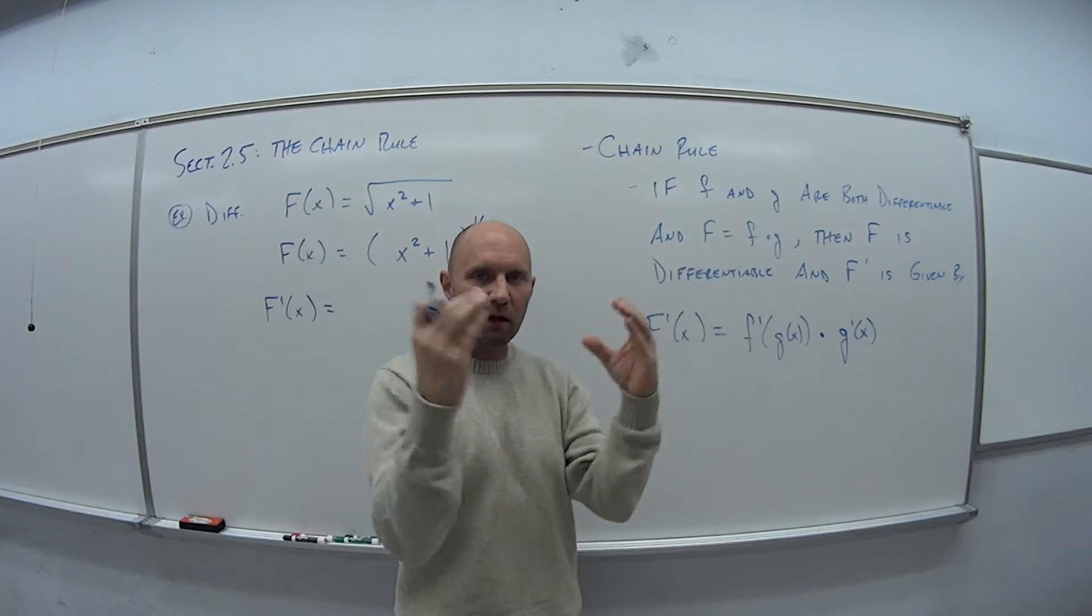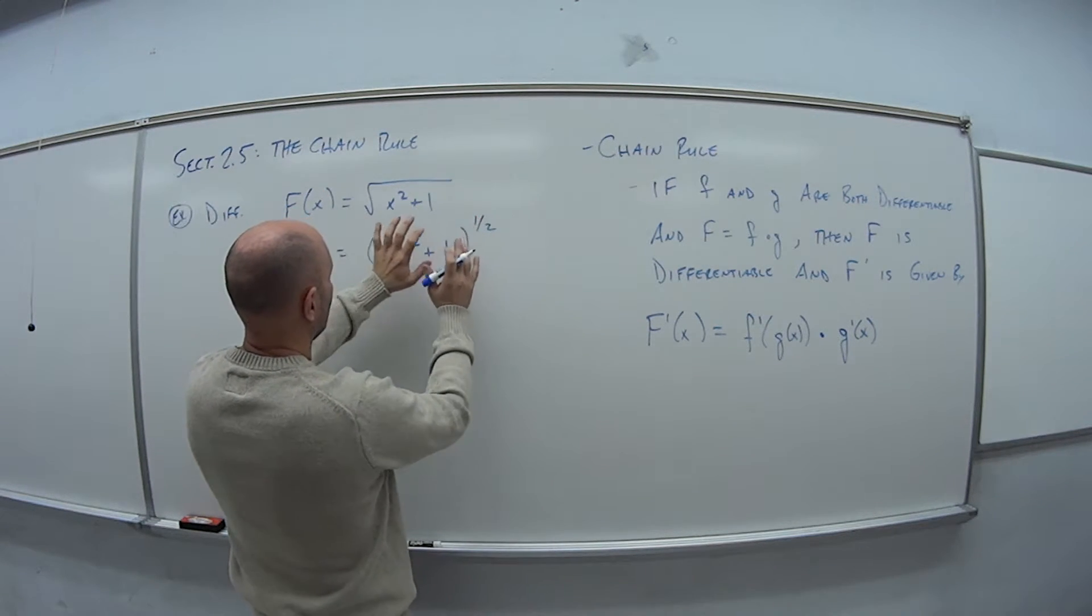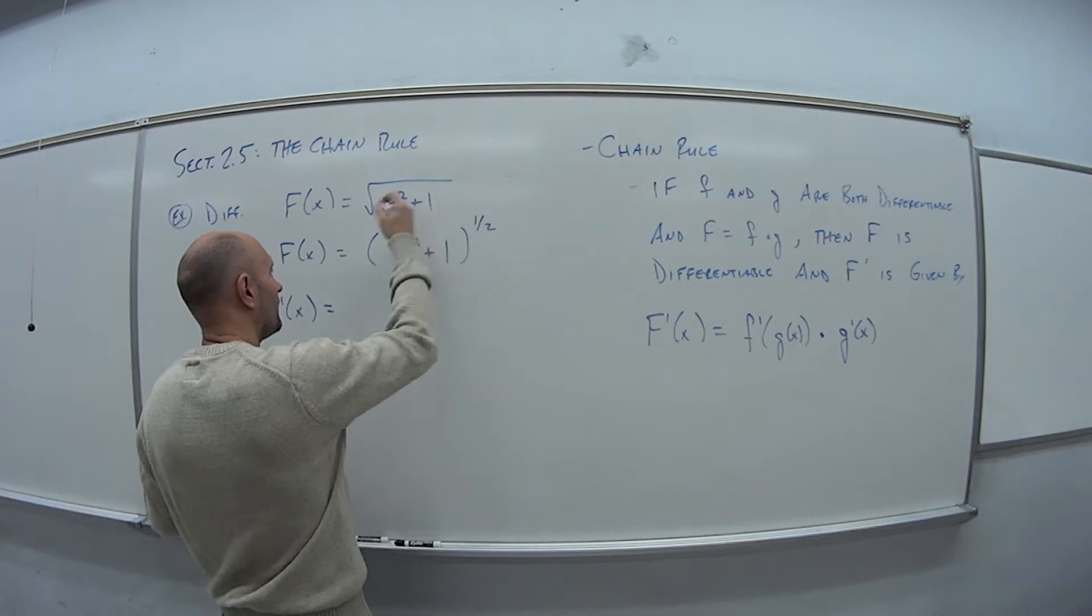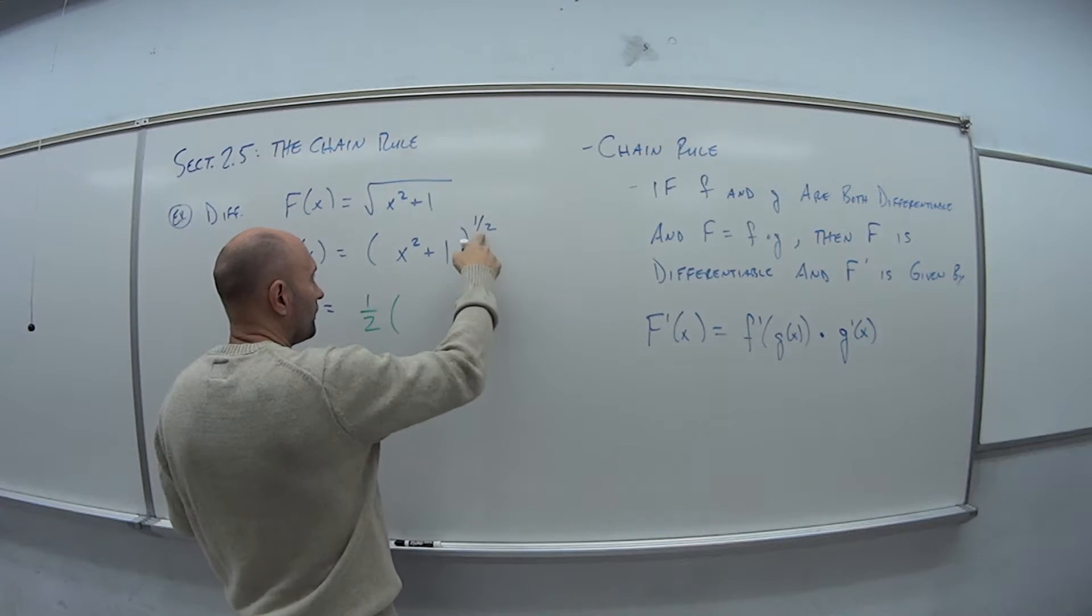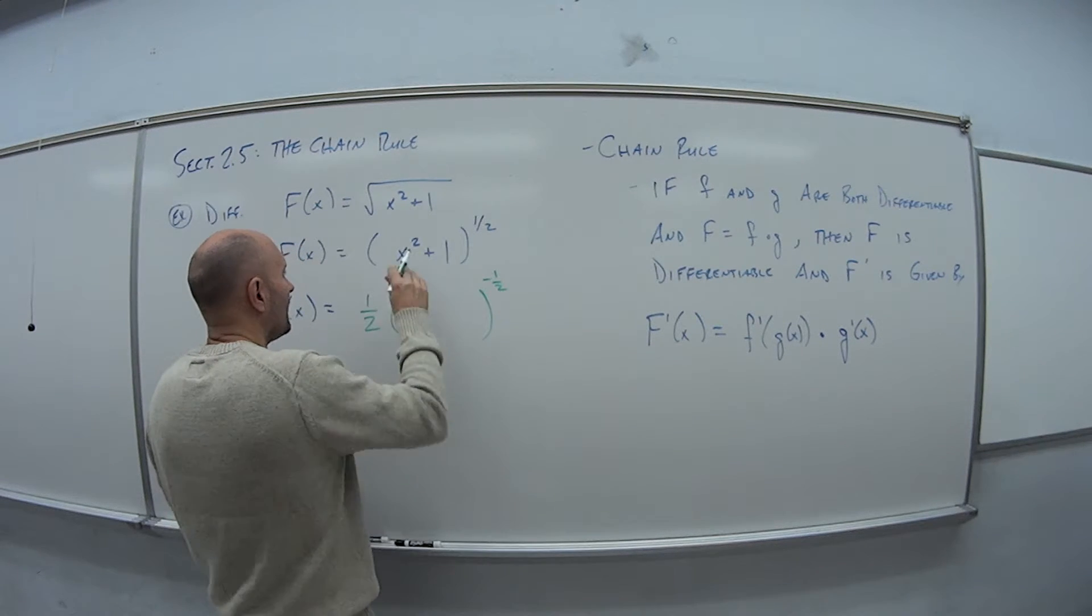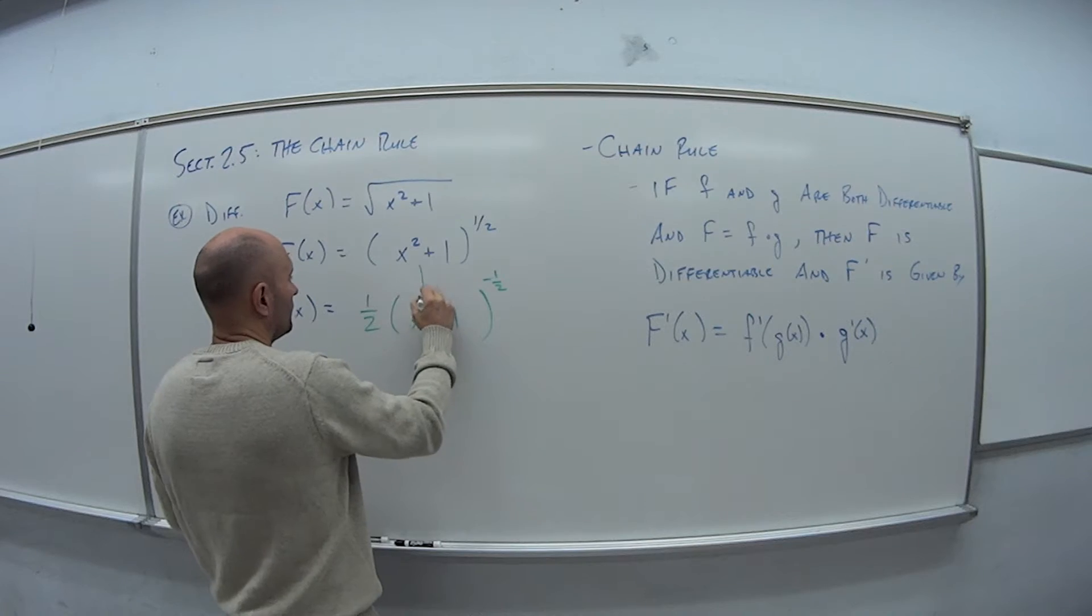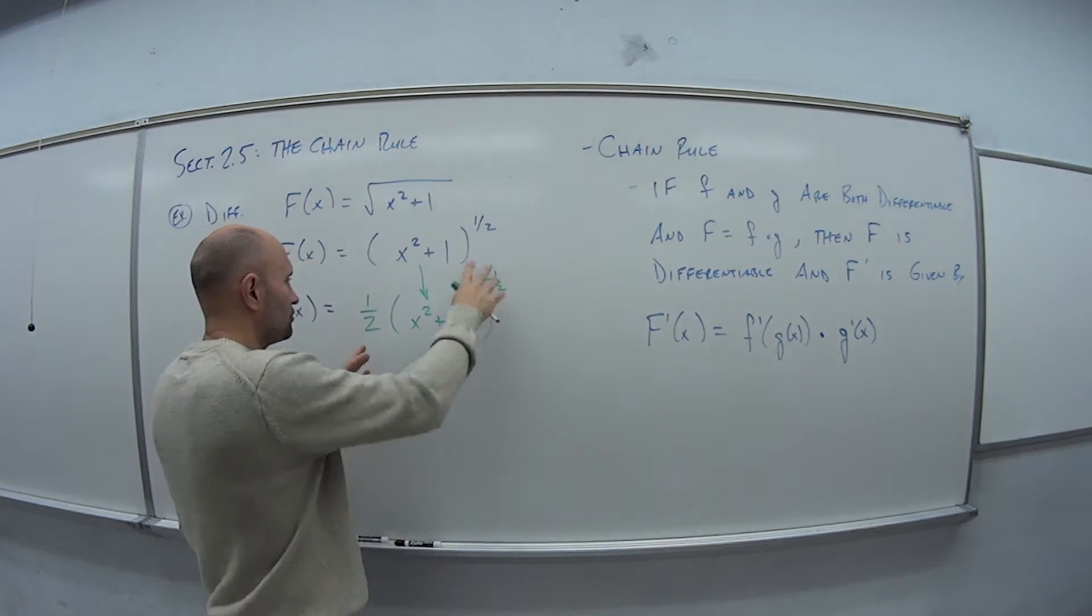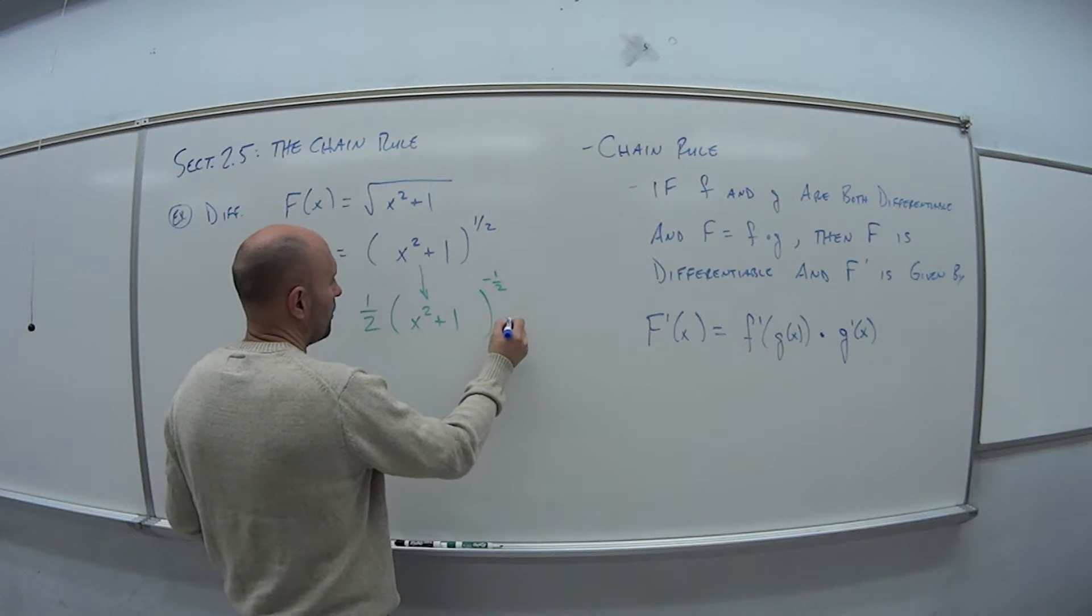So we work from the outside, so I have something to the one-half power. So how do I take that derivative? Well, I bring the one-half in front. I have to subtract one from the exponent, and then I leave everything inside. So that doesn't change in this first step. Just bring that down into the function that I've taken the derivative of.